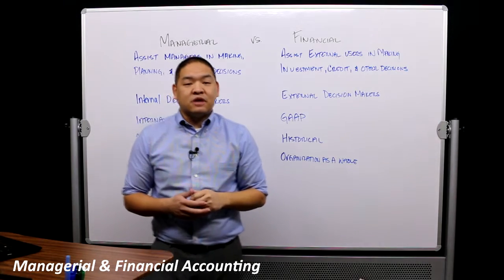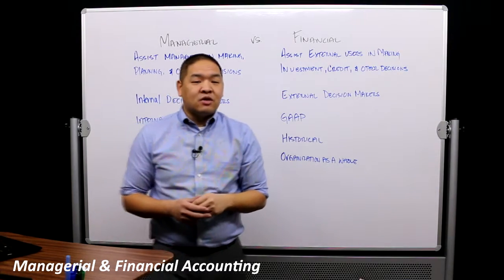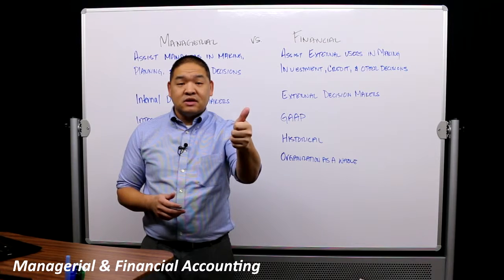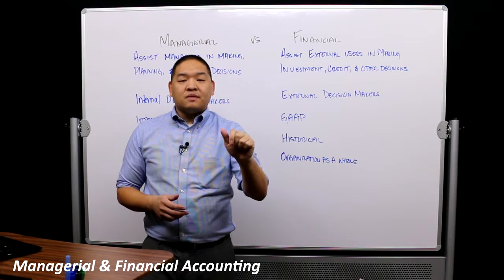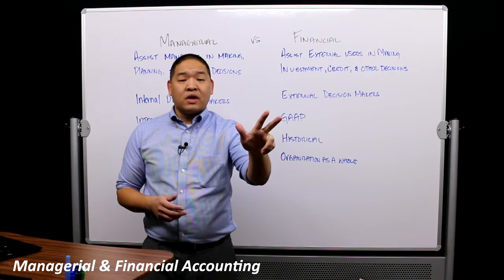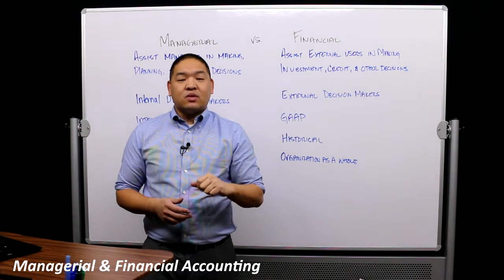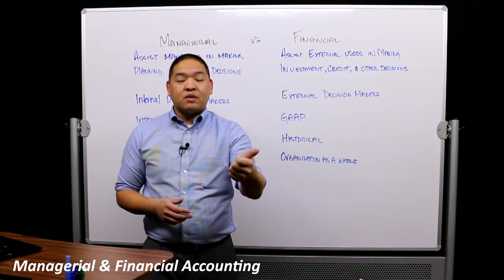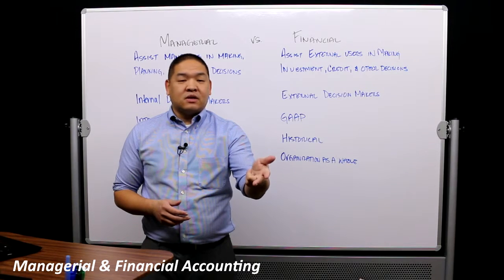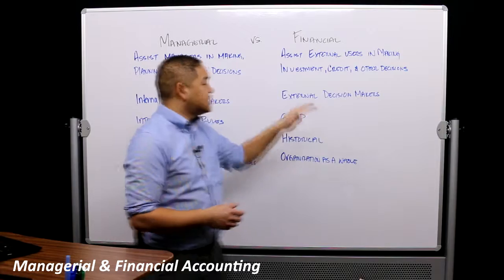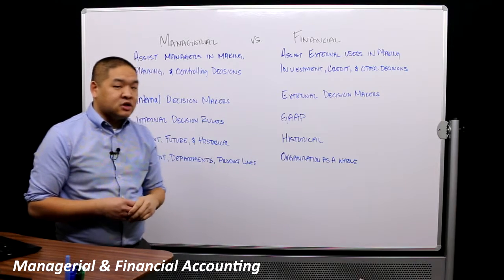We can also think about this from a banker's perspective, since bankers are also external users. A banker's decisions involve whether or not to lend, to leave their current loans in place, or to revoke a loan because a covenant was broken. So similar to an investor's buy, hold, and sell — a banker needs to know whether to lend more money, not lend more money, or pull back a loan already given because a loan covenant was broken.